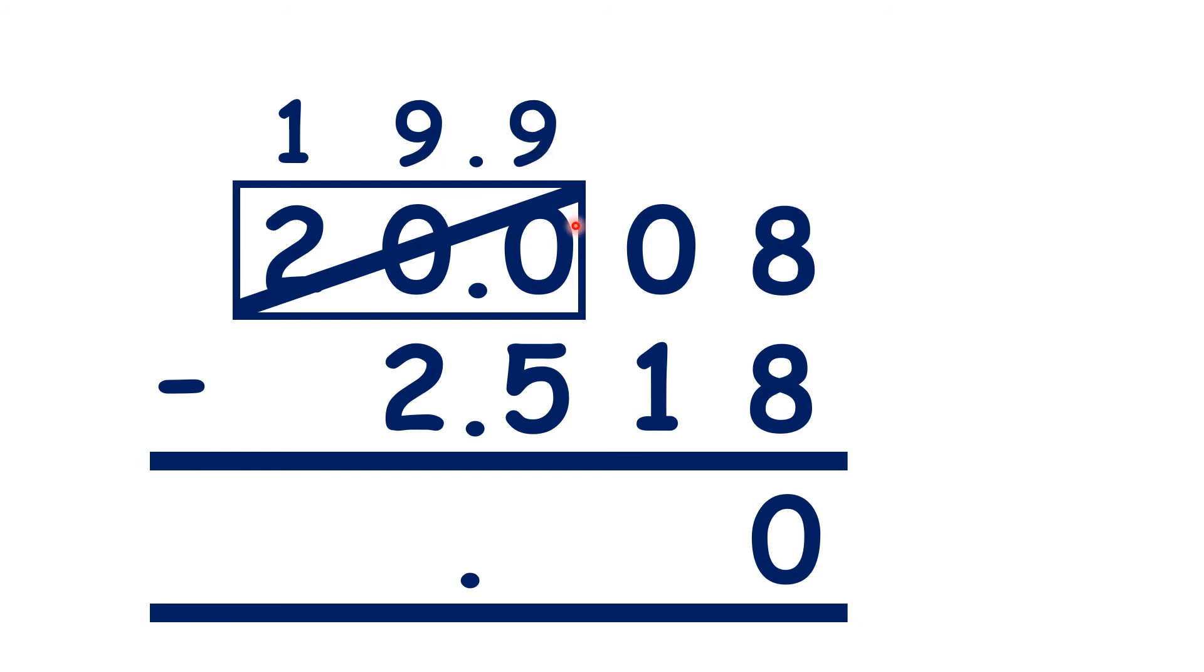That means we can have ten hundredths. Now ten minus one is nine, nine minus five is four, nine minus two is seven, and one minus nothing is one. So our answer is 17.490.